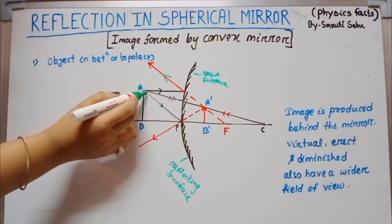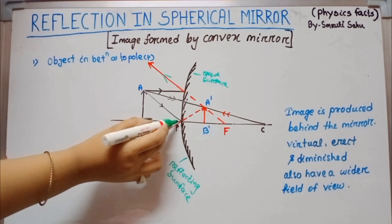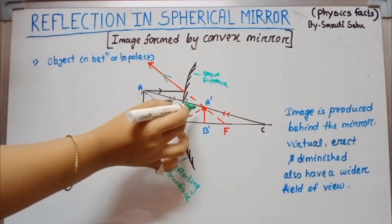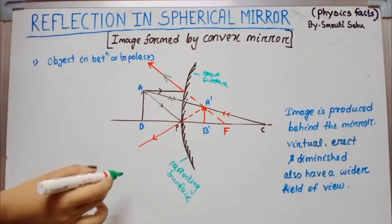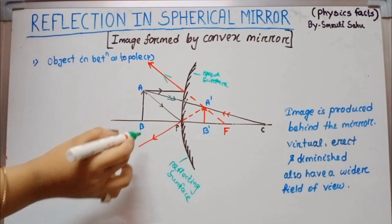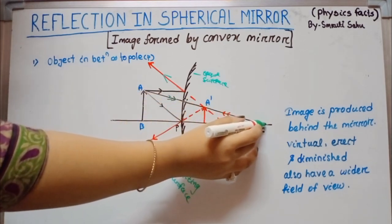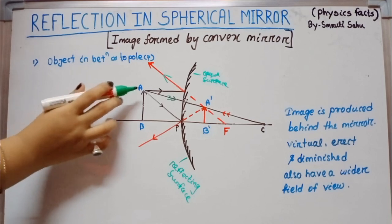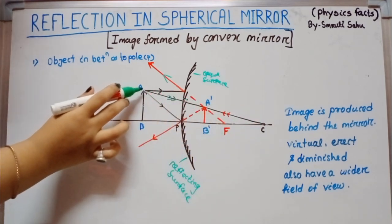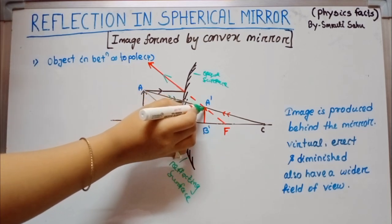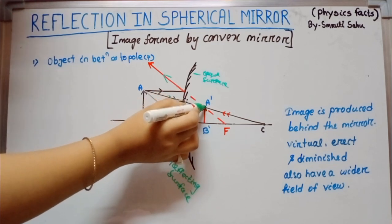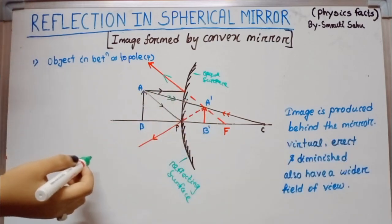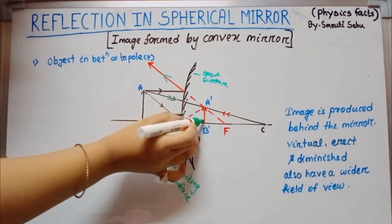Another incident ray passes through the pole and obeys the laws of reflection. These two reflected rays diverge and appear to meet at a point behind the mirror. We also consider another incident ray going through the center of curvature — it retraces its path. All three reflected rays appear to meet at the same point behind the mirror, where the image is produced. The image is virtual, erect, and diminished.